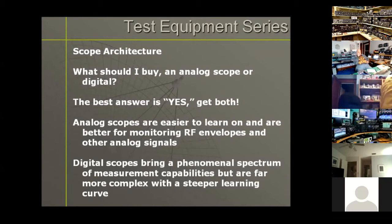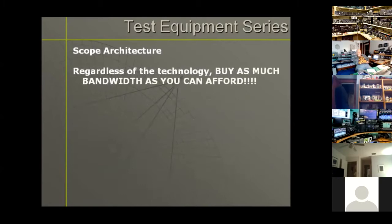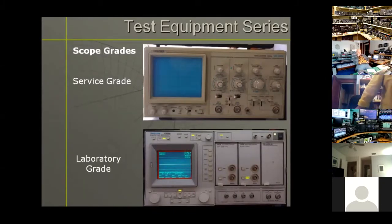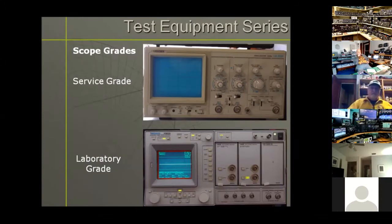Multi-domain scopes also provide a logic analyzer and/or spectrum analyzer function. Should you get analog or digital? You should really think about getting both. Analog scopes are easier to learn, better for monitoring RF envelopes in the shack and other analog signals. Digital scopes bring a phenomenal spectrum of measurement capabilities that are far more complex, with a steeper learning curve. Regardless of what technology you go for, get as much bandwidth as you can possibly afford.